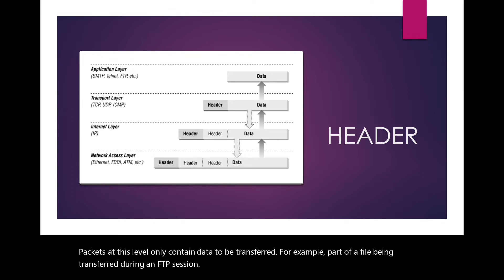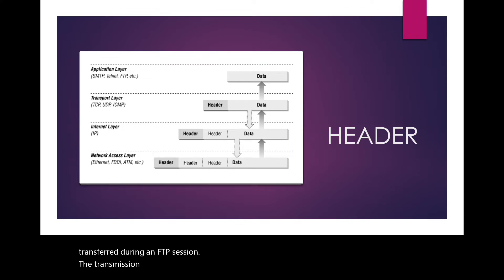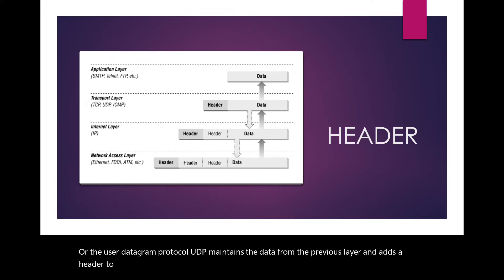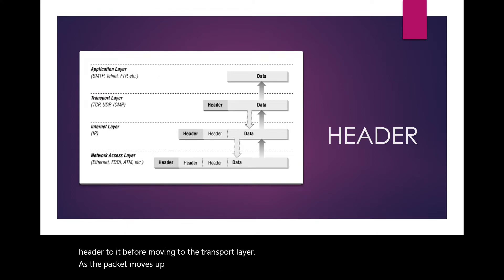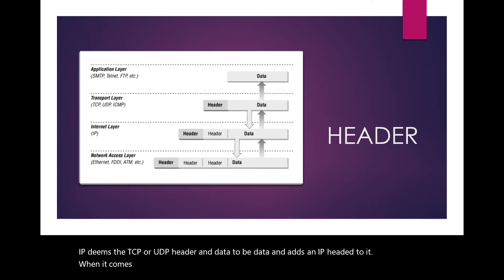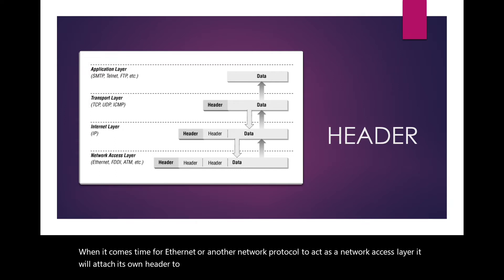The Transmission Control Protocol (TCP) or the User Datagram Protocol (UDP) maintains the data from the previous layer and adds a header to it. As the packet moves up the stack, IP treats the TCP or UDP header and data as data and adds an IP header to it. When it comes time for Ethernet or another network protocol to act as a network access layer, it will attach its own header to the IP packet and deliver it.